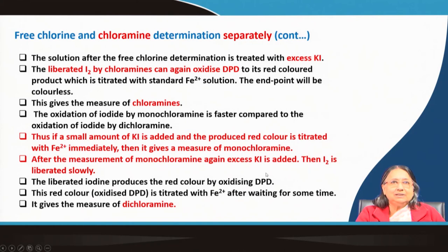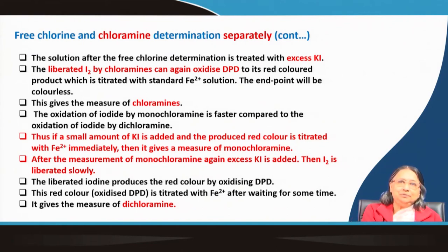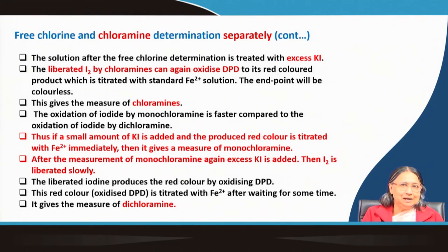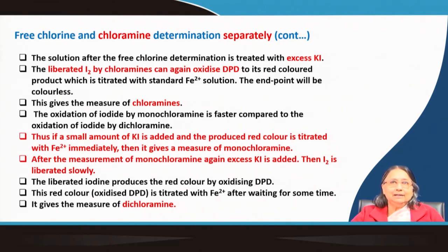To summarize the DPD approach: without KI, only free chlorine oxidizes DPD directly. Adding small KI and titrating immediately gives monochloramine. Adding excess KI and allowing more time gives dichloramine. DPD is present throughout. The whole method is based on the different kinetics of DPD oxidation: free chlorine oxidizes DPD fast; chloramine is slow; iodine oxidizes DPD fast; and oxidation of iodine by monochloramine is faster than by dichloramine.